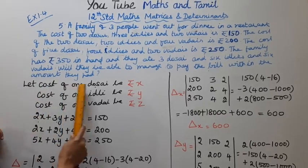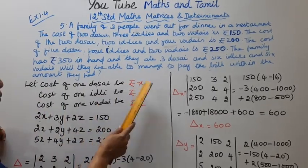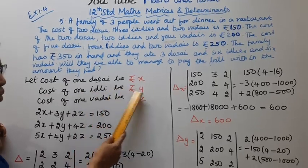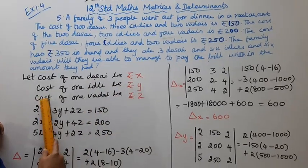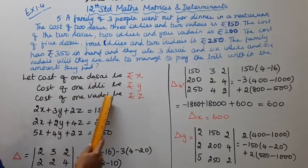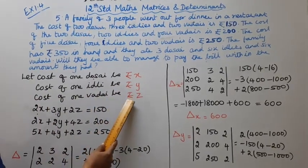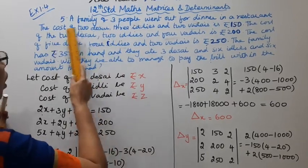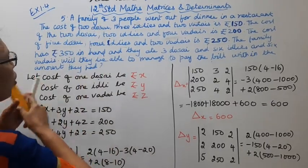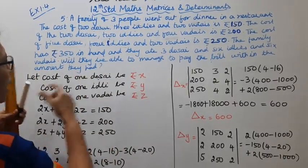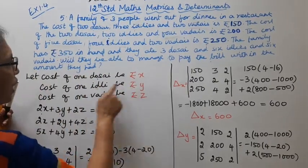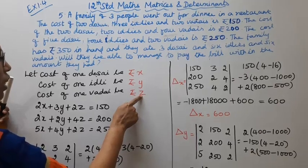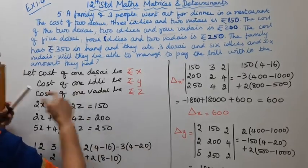Let the cost of 1 dosai be Rs. X, the cost of 1 idli be Rs. Y, and the cost of 1 vadai be Rs. Z. So dosai is represented by X, idli by Y, and vadai by Z.